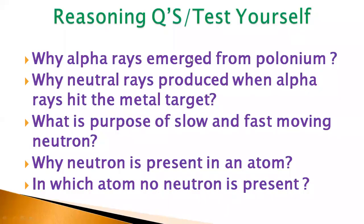So there are some reasoning questions or test yourself. Why alpha rays are emerged from polonium source? Why neutral rays produced when alpha rays hit the metal target? What is the purpose of slow and fast moving neutron? Why neutron is present in an atom? And the last one is: in which atom no neutron is present?